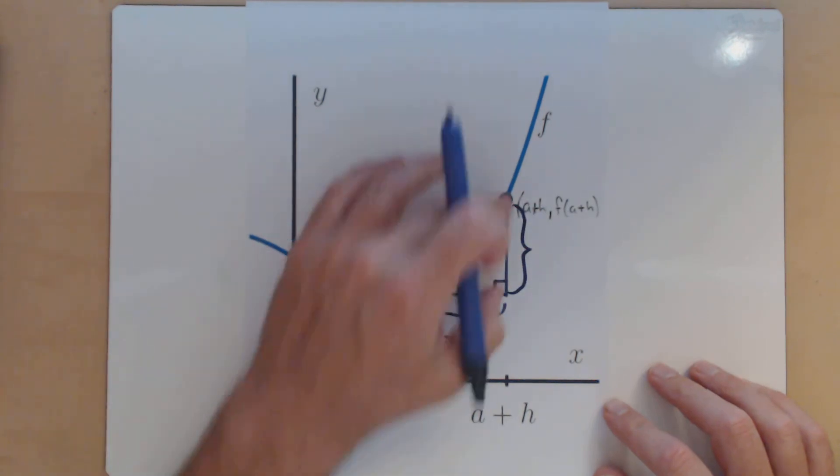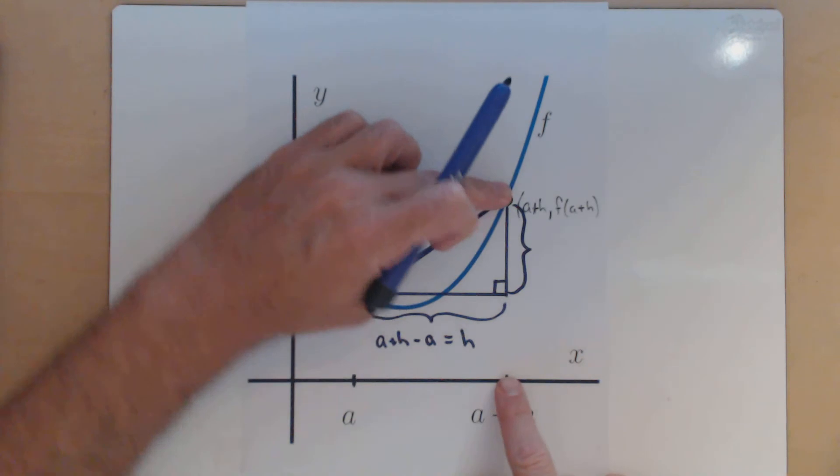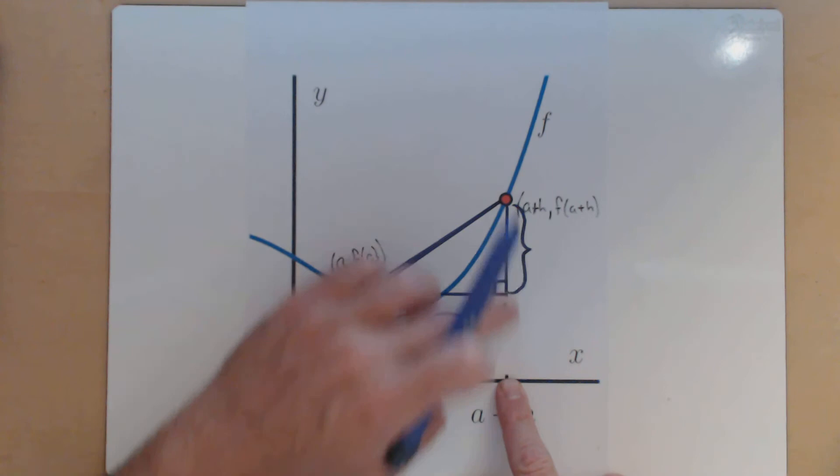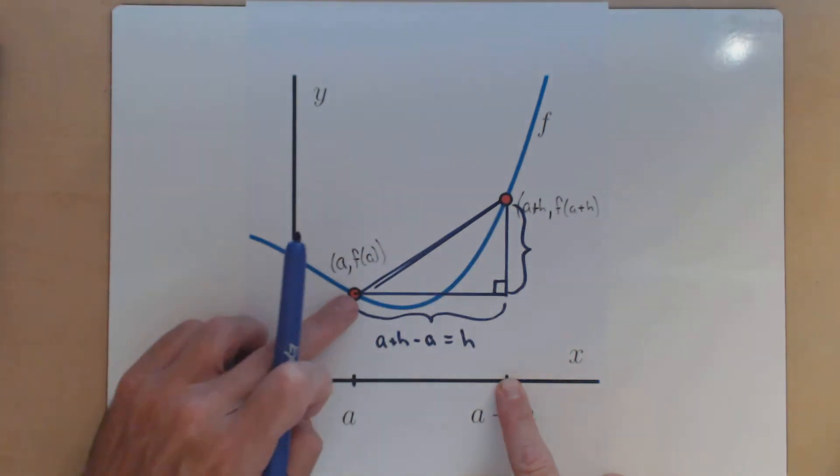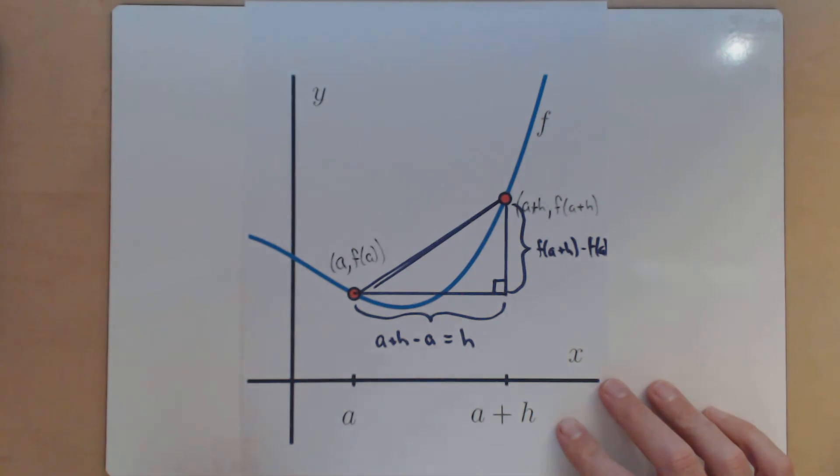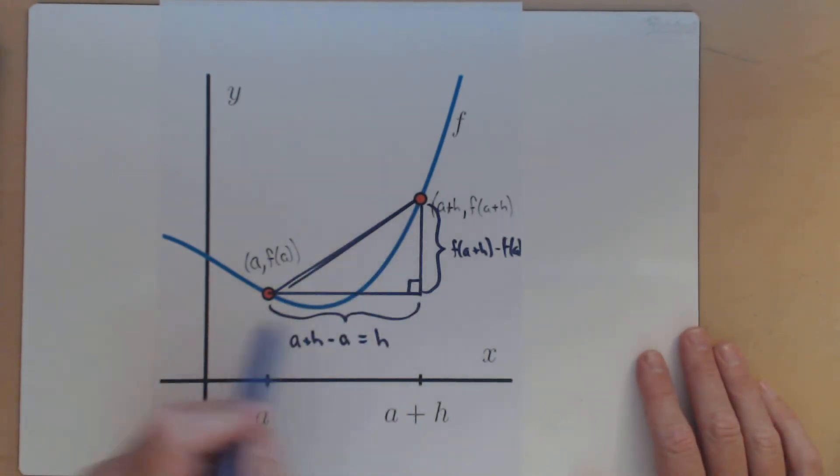For this leg, we know that from here to here is our y value, f of a plus h. So what we have is a change in output here, and we have a change in input. Well, from what we know of slope, slope is our rise over our run.